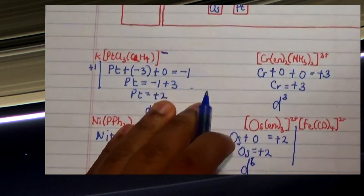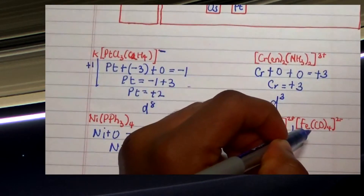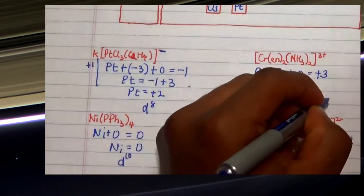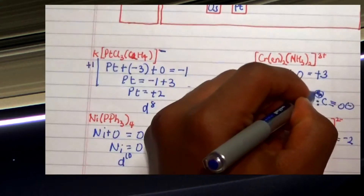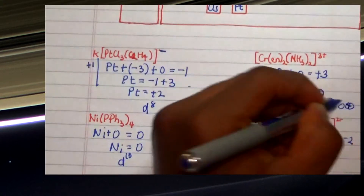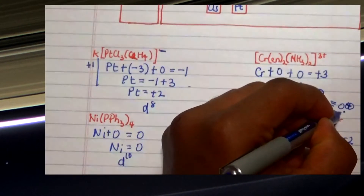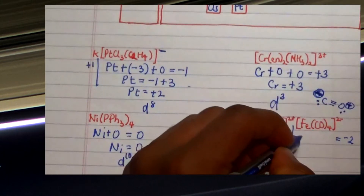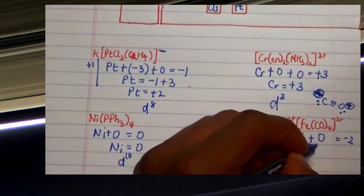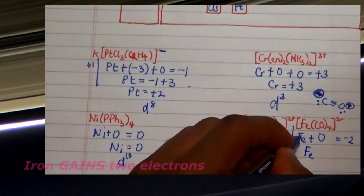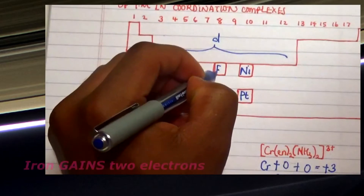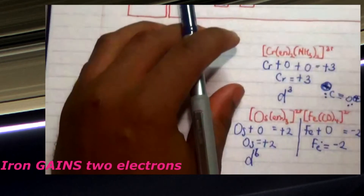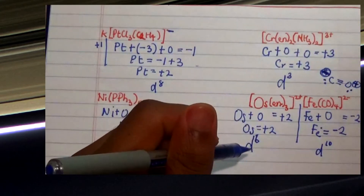The counter-anion has an overall charge of negative two. Carbon monoxide has an overall charge of zero — in its structure, carbon carries a negative charge, oxygen a positive charge, and both have lone pairs. Four CO ligands coordinate to iron, and since those four ligands contribute zero charge, iron plus zero equals negative two, making iron's oxidation state negative two. Iron is also in group eight, so starting with eight electrons and gaining two gives us d10.